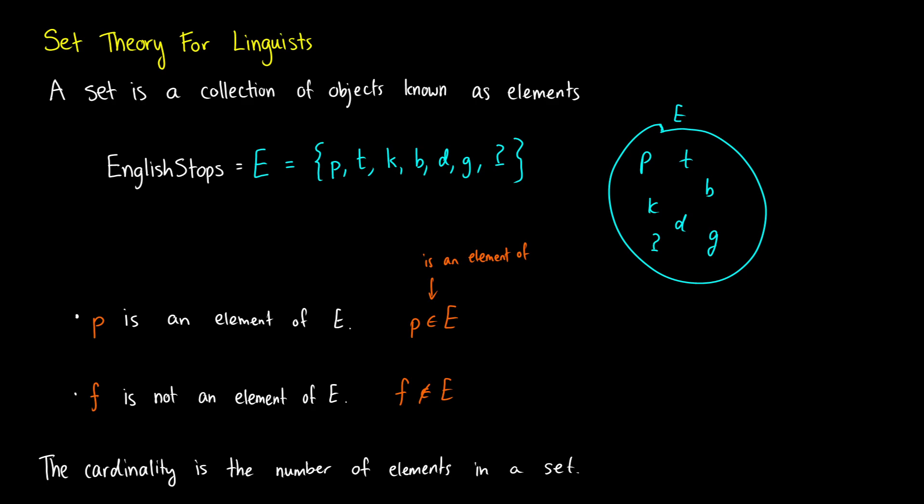We can use sets as classification systems to talk about certain groups of objects, like our English stops, our English vowels, all the nouns, the countable nouns, the uncountable nouns, the verbs, the state verbs, the factive verbs, and so on.